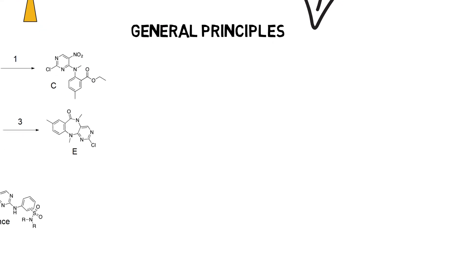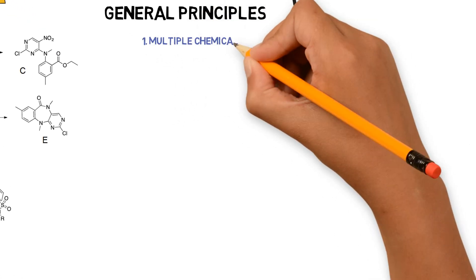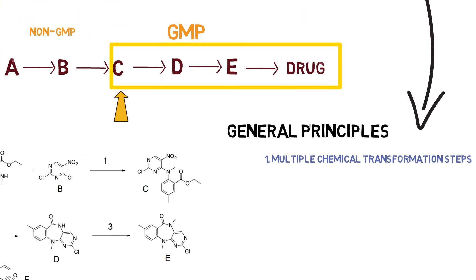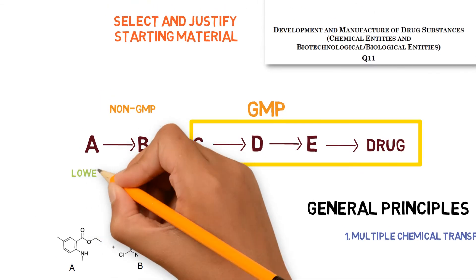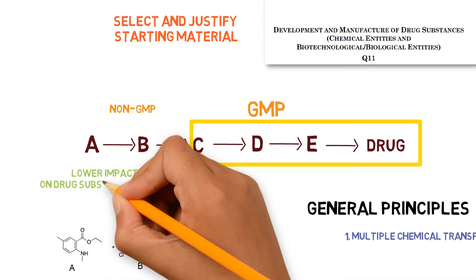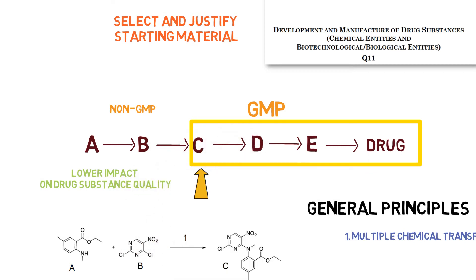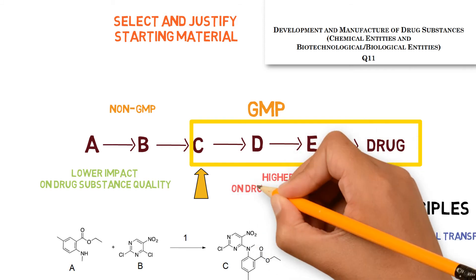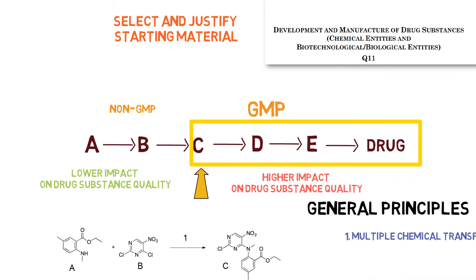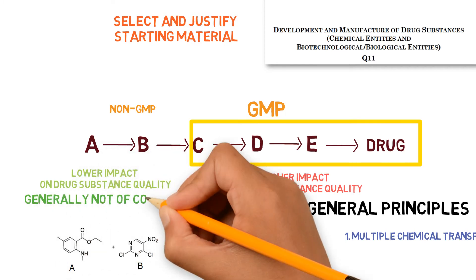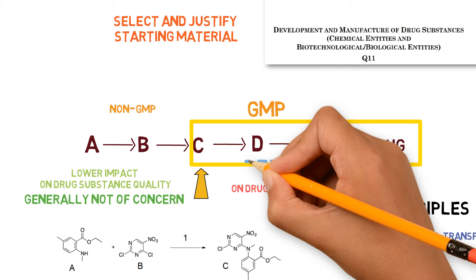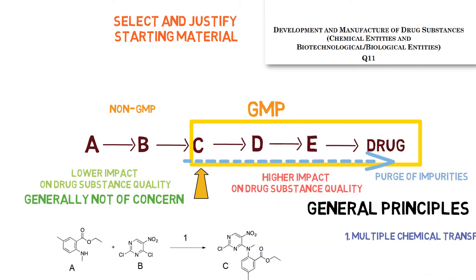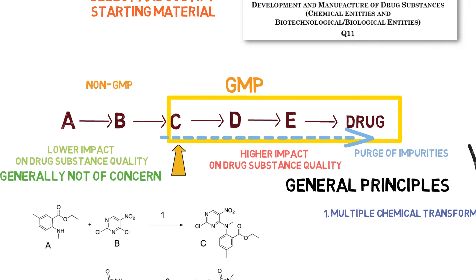The route of synthesis after the introduction of the starting material must include multiple chemical transformation steps. In a multi-step synthesis, changes that occur near the beginning of the manufacturing process have lower potential to impact the quality of the drug substance. Any step that, if changed, could impact the drug substance quality should be performed after the introduction of the starting material. Hence, changes before the starting material should generally not be of concern, since there would be plenty of stages after its introduction to ensure the purge of impurities arising from the previous steps.